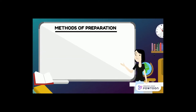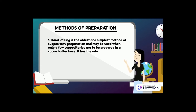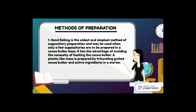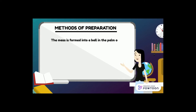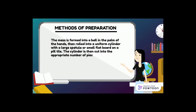Methods of preparation. Number one, hand rolling is the oldest and simplest method of suppository preparation, used when only a few suppositories are to be prepared in a cocoa butter base. It has the advantage of avoiding the necessity of heating the cocoa butter. A plastic-like mass is prepared by triturating grated cocoa butter and active ingredients in a mortar. The mass is formed into a ball, then rolled into a uniform cylinder with a large spatula or small flat board, and the cylinder is cut into appropriate pieces which are rolled at one end to produce a conical shape.